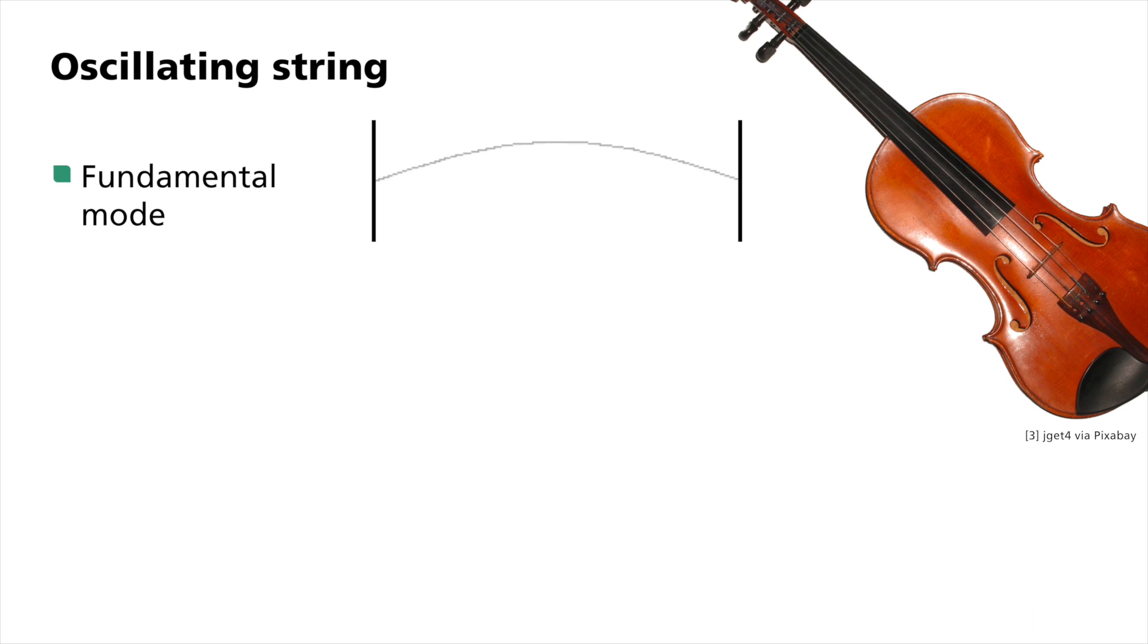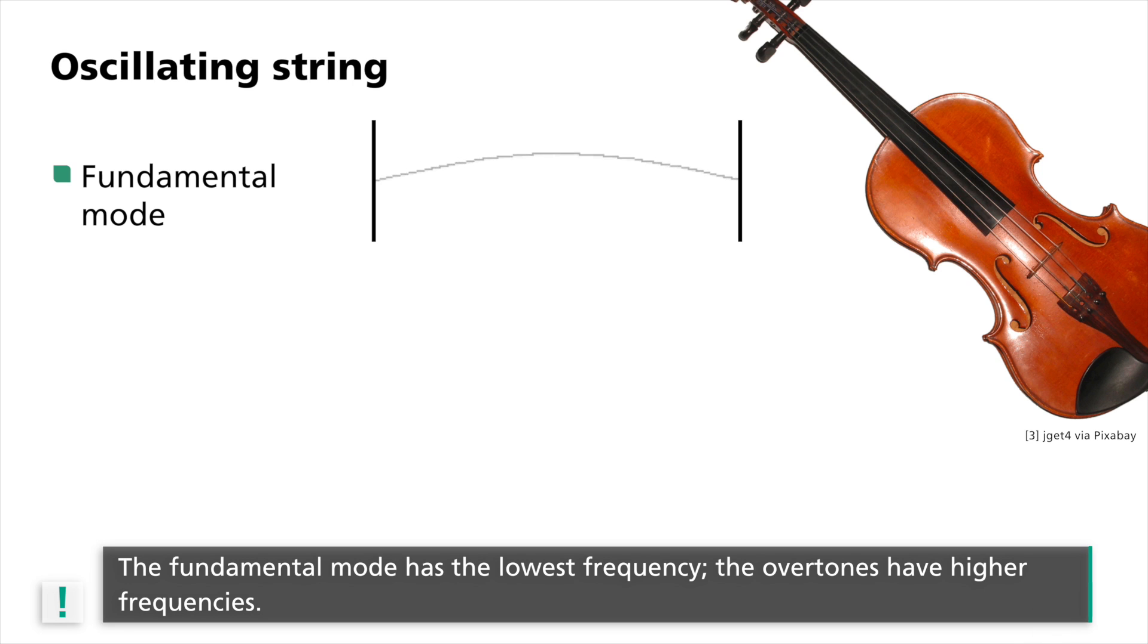It has two wave nodes, left and right. At these points, a destructive superposition or interference of the oscillation takes place. In the middle, you can see constructive interference creating a wave trough. We call this free oscillation the fundamental mode.